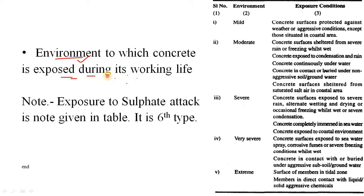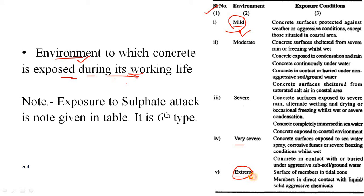As per Indian Standard IS 456, there are a total of five types of environment or exposure. These exposures are classified based on their aggressiveness. More aggressive environments are towards the bottom of the classification. The first one is known as mild and the last one is known as extreme — mild meaning minimum aggressiveness and extreme meaning maximum aggressive conditions.